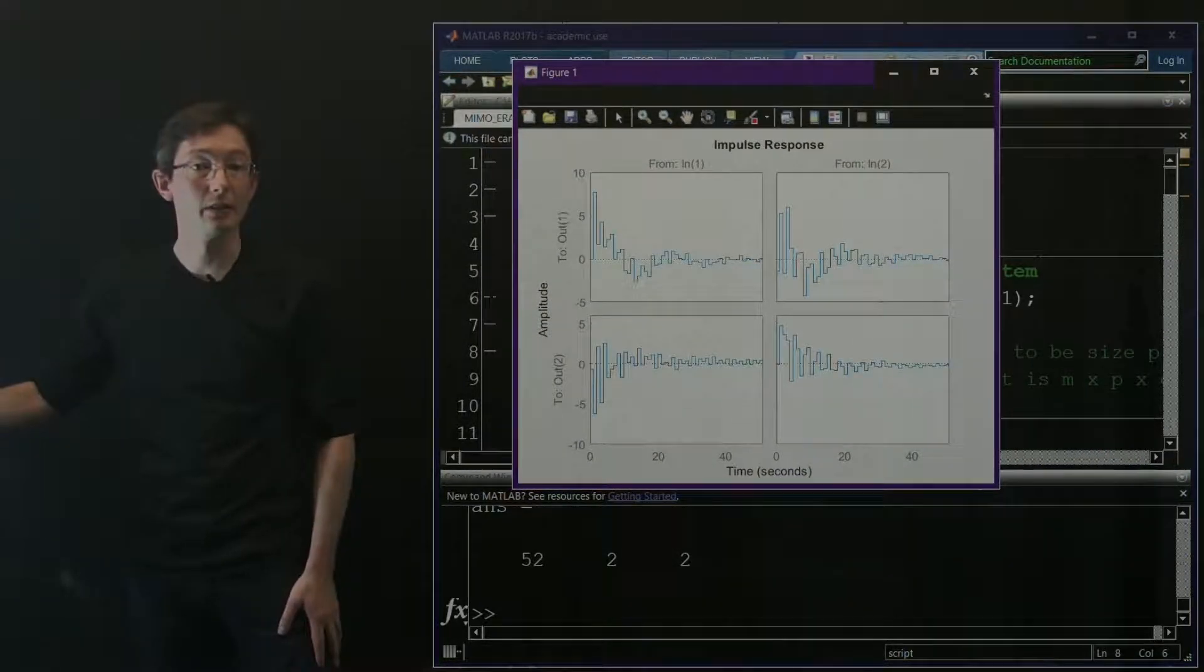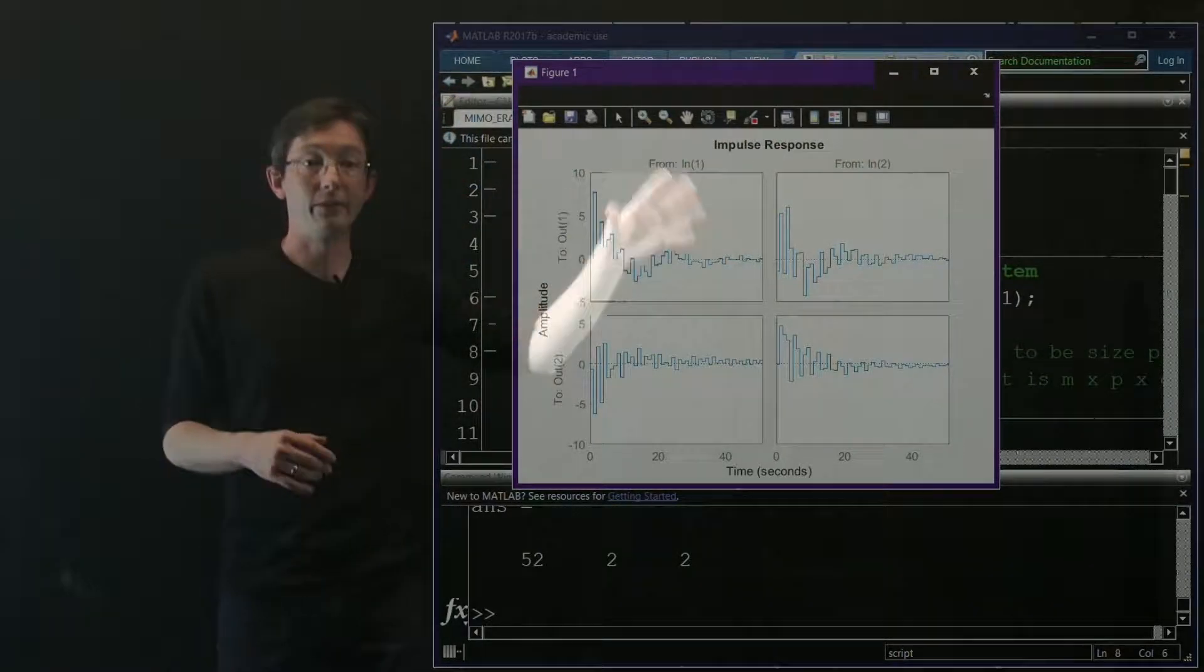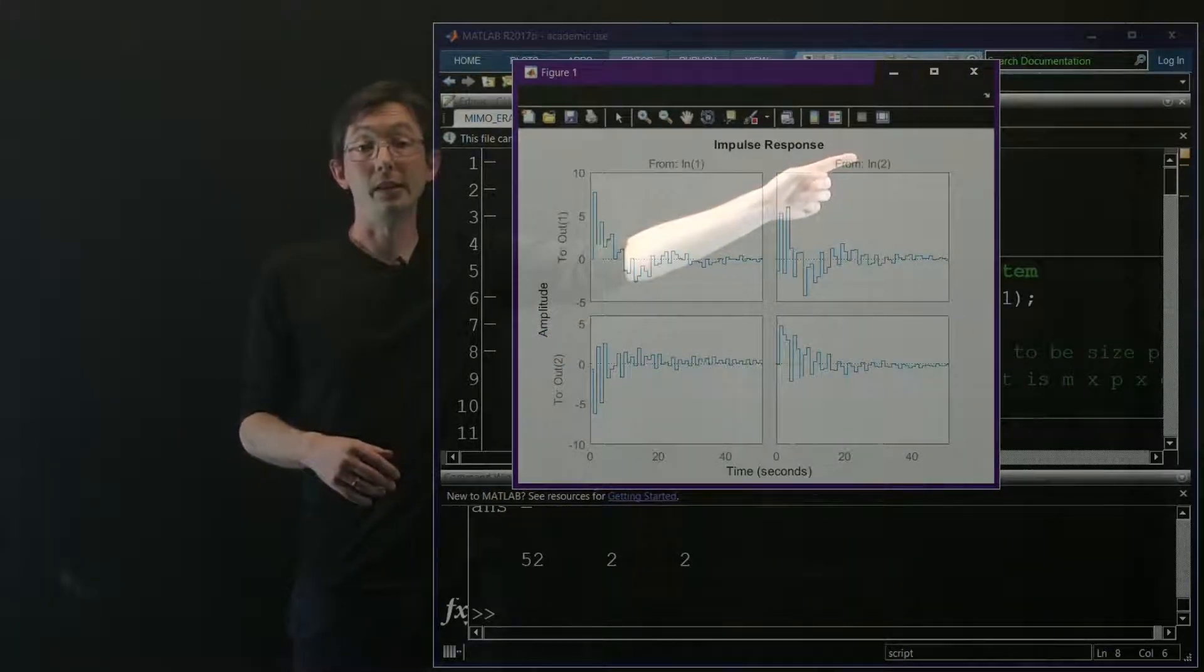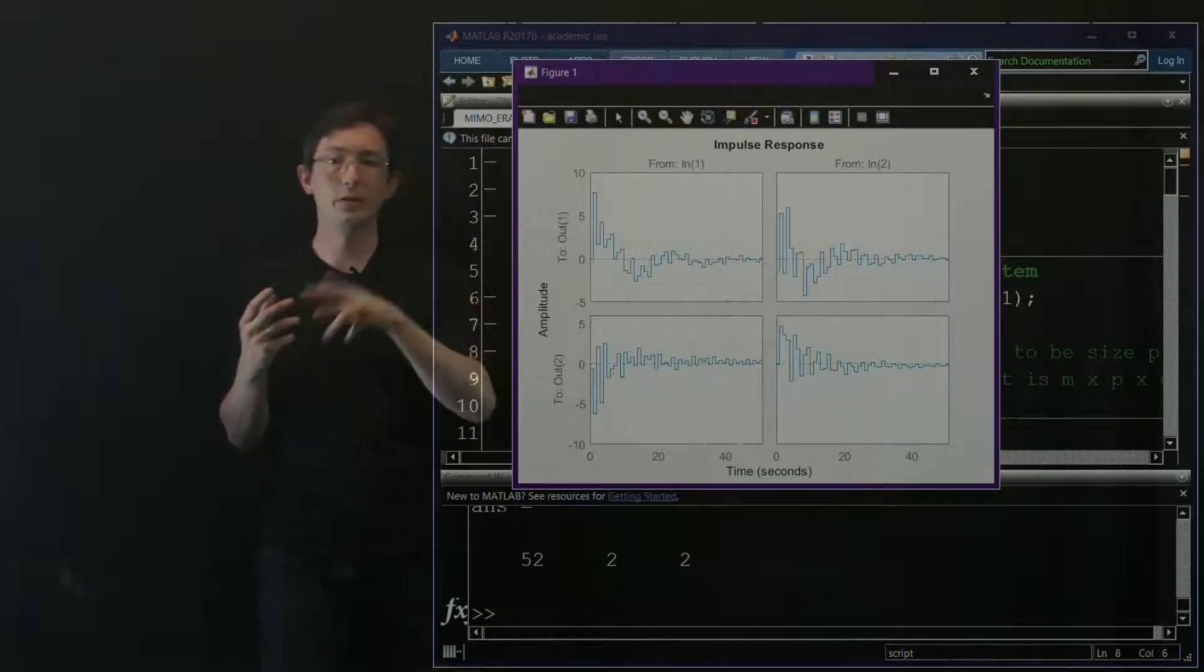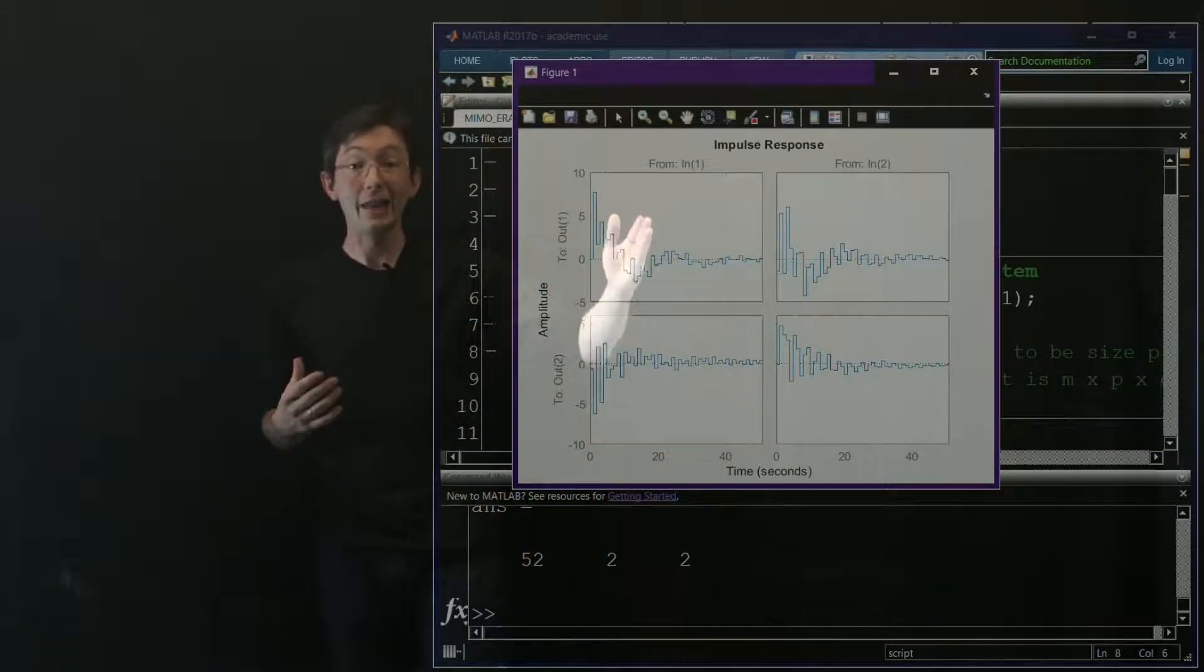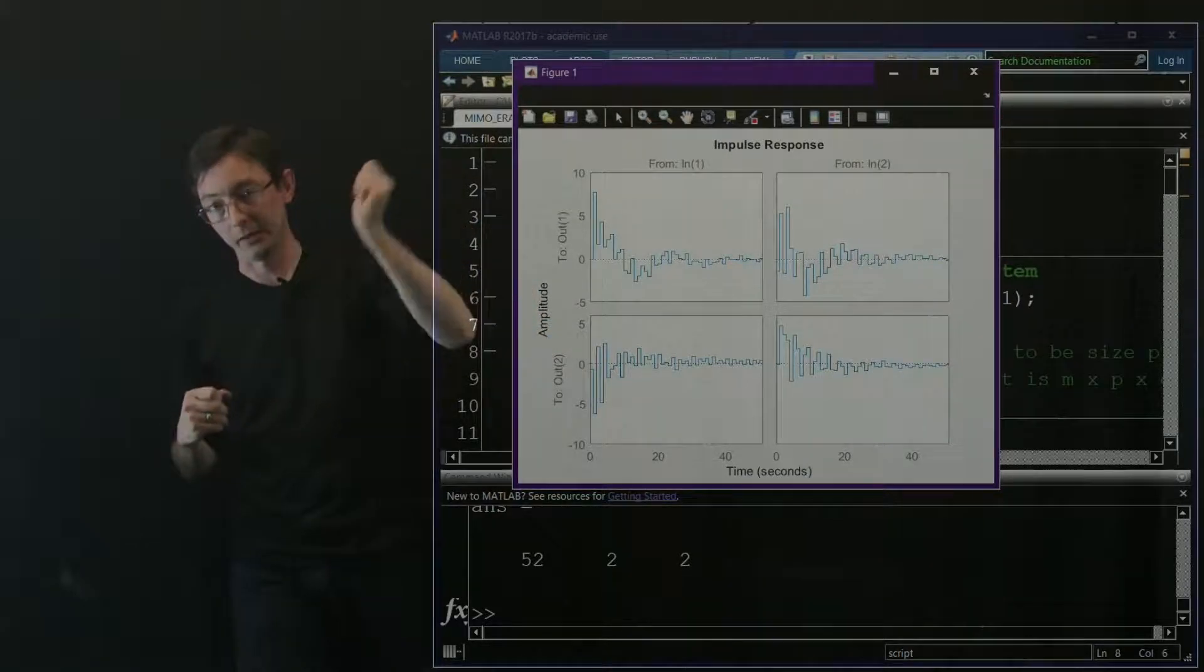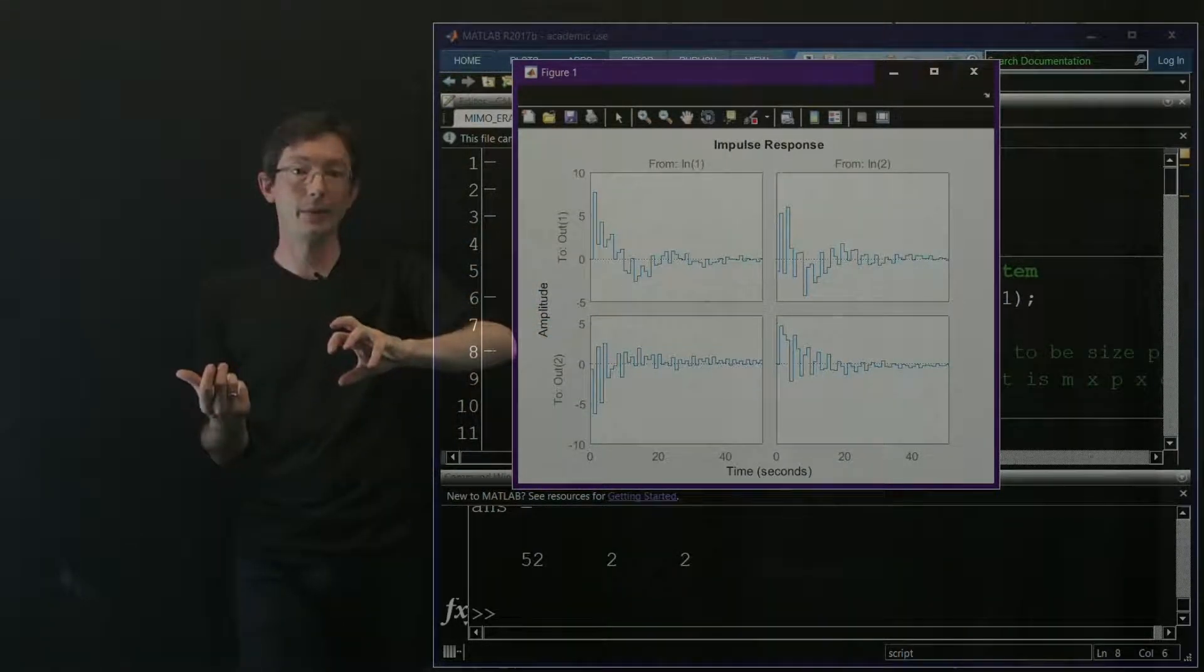This is what the data looks like. I have two inputs and two outputs. If I give an impulse on input one, I get these outputs. If I have an impulse on input two, these are the two output responses. With a two input, two output system, I get an array of impulse responses - two by two impulse responses. This is literally the data I collect. I have an experiment, I whack my actuator with a hammer, I crank up the control knob and crank it back down.